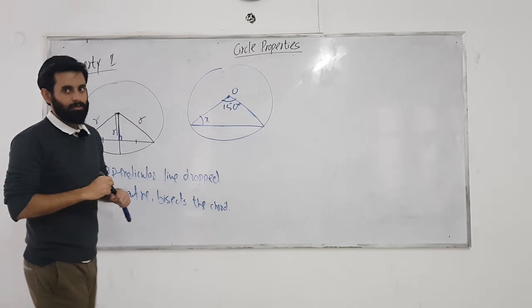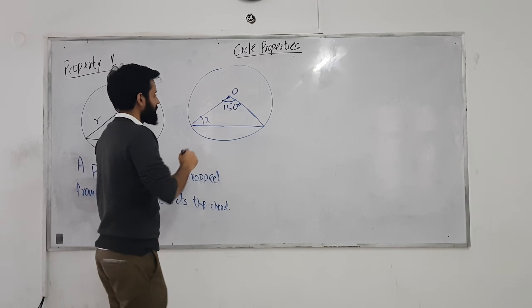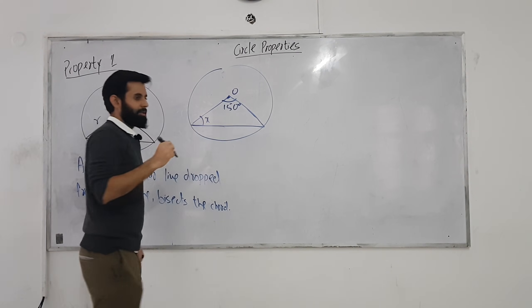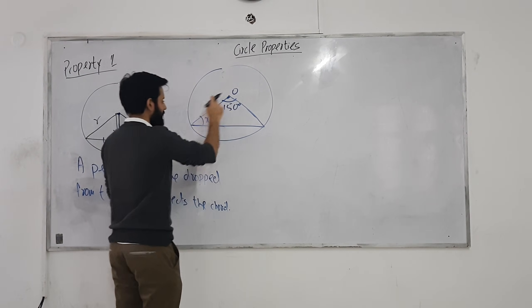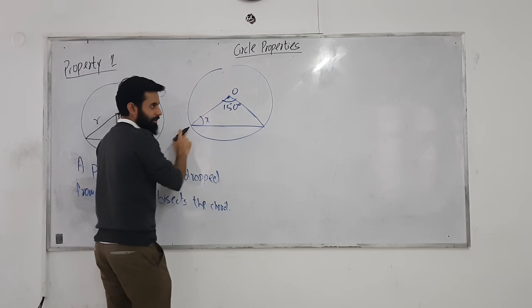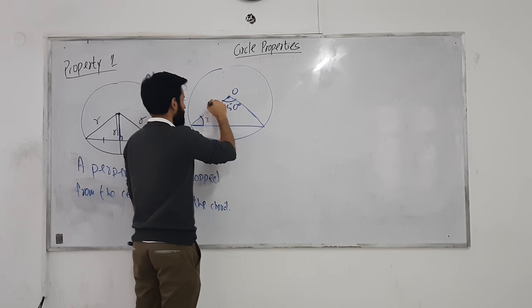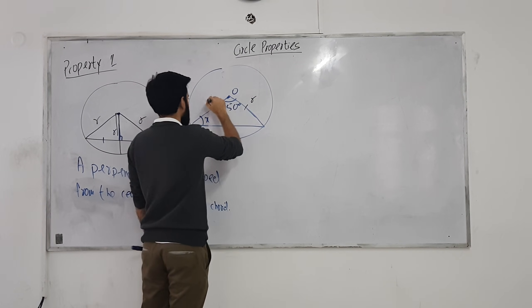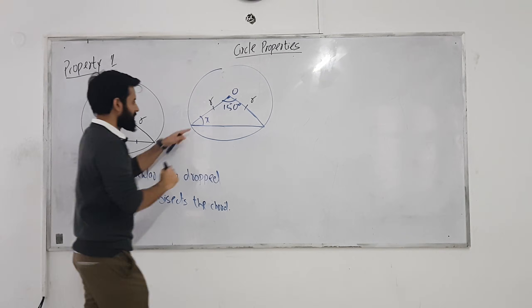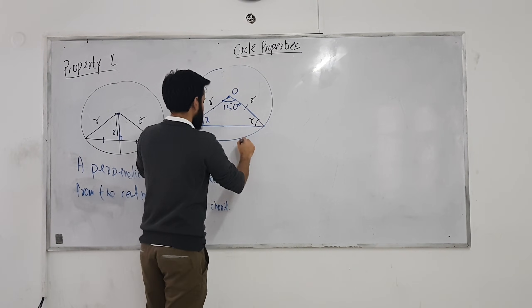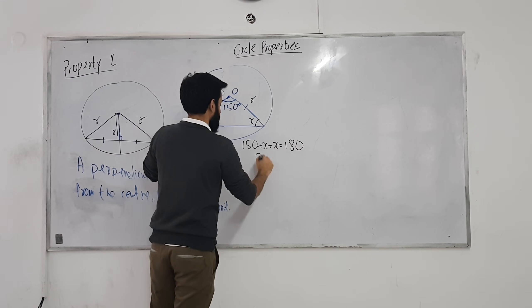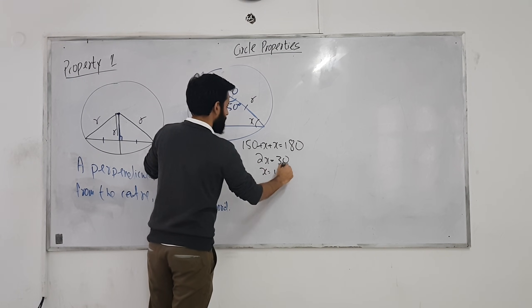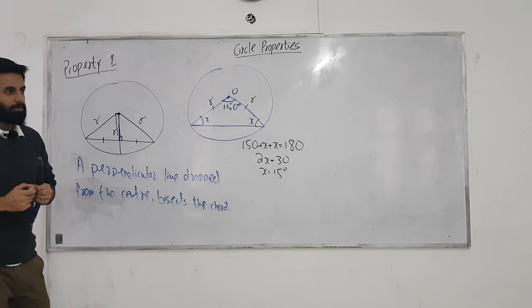Divide by 2. Although the question is not telling you isosceles triangle, we know for a fact it's isosceles triangle. Why? Because here's the center. Here's a line which touches the circumference. These two lines are radii. So if this is x, this will also be x. So 150 plus x plus x equals 180. So 2x equals 30. x equals 15 degrees.